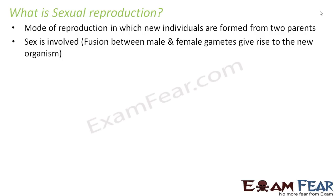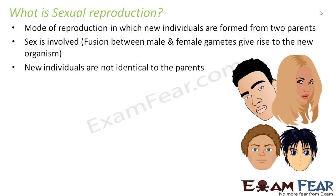Fusion between the male and female gametes gives rise to the new organism — a gamete is nothing but a specialized sex cell. The new individuals are not exactly identical to the parents; however, they have some similarities. At the same time they also have certain new characters not present in either parent. For example, in this picture the mother has brown eyes, the father has black eyes, but the kid has blue eyes — a character not present in either parent.